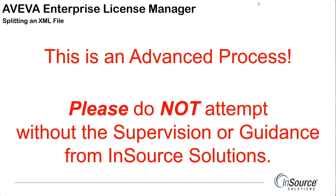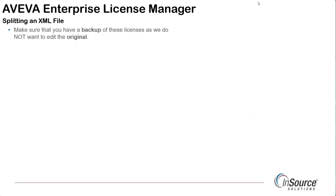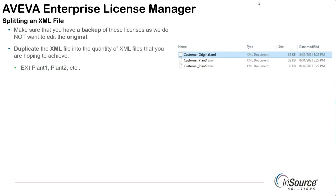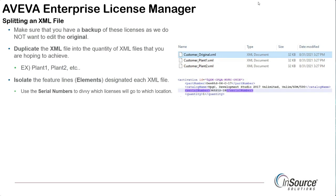One disclaimer: this process of splitting XML files is an advanced process. Please do not attempt to do this without the supervision or guidance from In-Source Solutions. We need to make sure that we have a backup first. We are not going to edit the original XML file — in fact we're going to duplicate that original so we have one file per plant or location, such as Plant One and Plant Two. I want to isolate the feature lines or elements for each location, because I'm going to cut them from one to the other. I need to isolate my serial numbers so I know which serial number belongs to Plant One and which belongs to Plant Two.